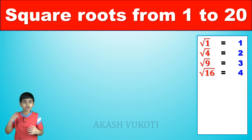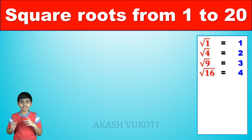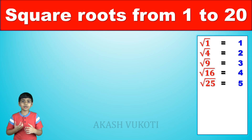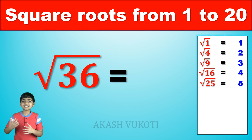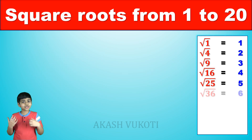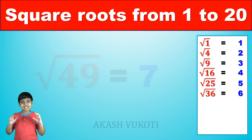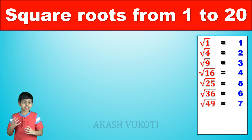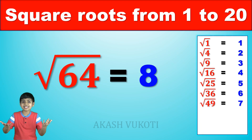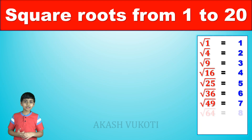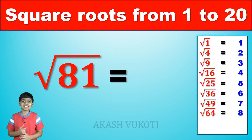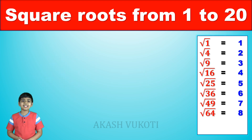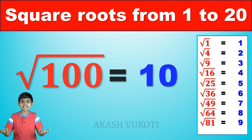The square root of 25 is 5. The square root of 36 is 6. The square root of 49 is 7. The square root of 64 is 8. The square root of 81 is 9. And the square root of 100 is 10.